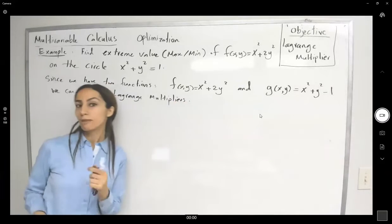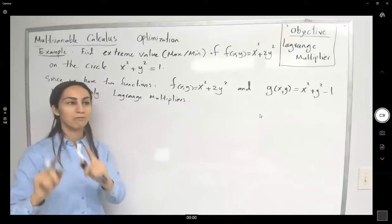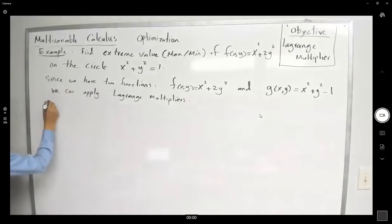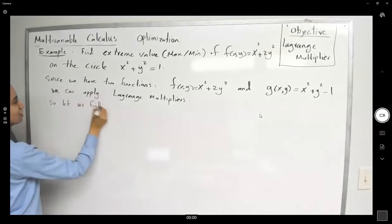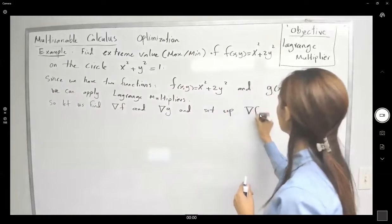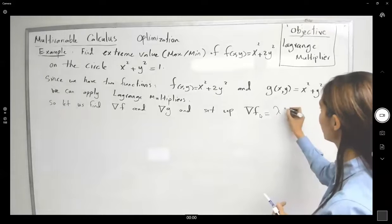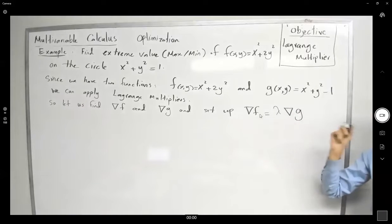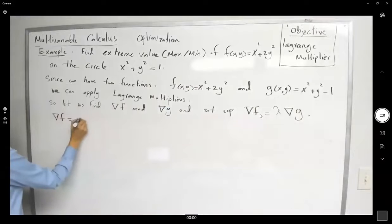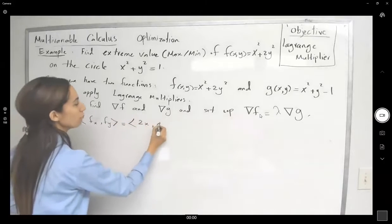To apply the method of Lagrange multipliers, we need the gradient of f and the gradient of g, and set them equal because at the optimal value of f, the gradient of f and the gradient of g are parallel. So the gradient of f equals (f_x, f_y) = (2x, 4y).